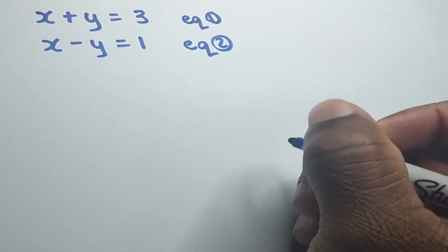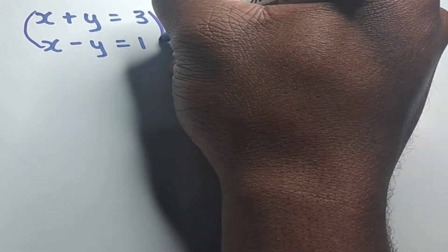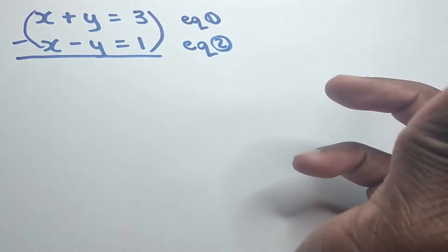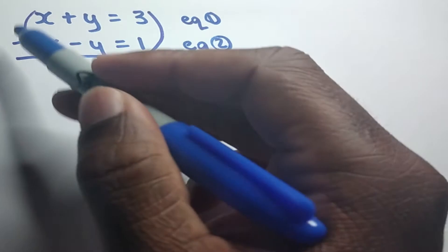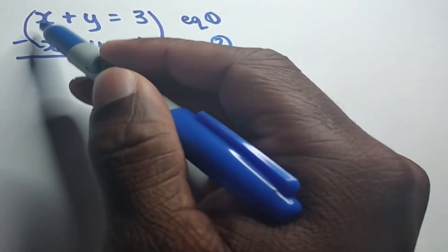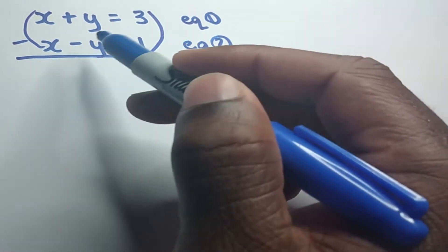So what we are going to do is to simply subtract both equations from each other. So we are going to simply subtract equation 2 from equation 1. So let's see what will happen when we do that. So we'll end up with x minus x, that will give us a 0 right here.